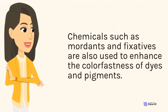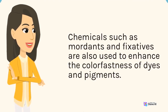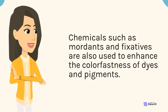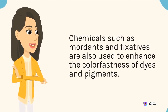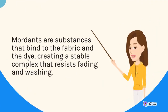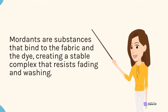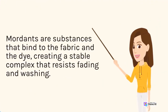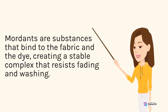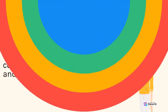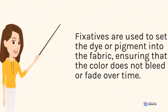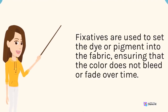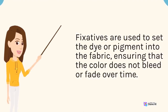Chemicals such as mordants and fixatives are also used to enhance the colorfastness of dyes and pigments. Mordants are substances that bind to the fabric and the dye, creating a stable complex that resists fading and washing. Fixatives are used to set the dye or pigment into the fabric, ensuring that the color does not bleed or fade over time.